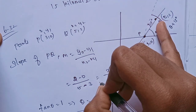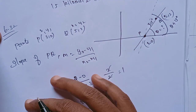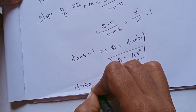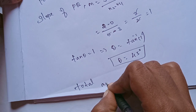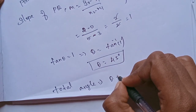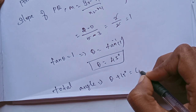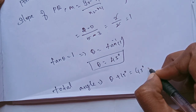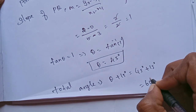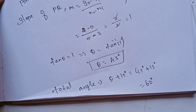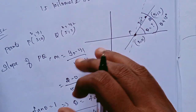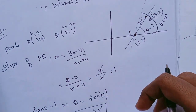If theta is 45 degrees, then the total angle is theta plus 15 degrees, which is 45 degrees plus 15 degrees, giving 60 degrees. So the new angle is 60 degrees.